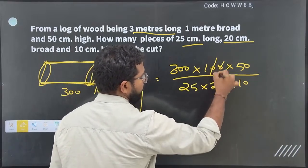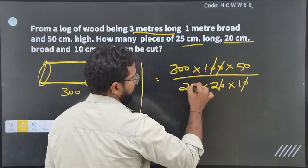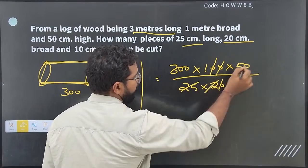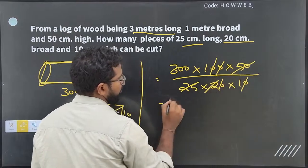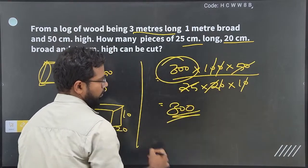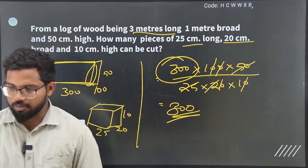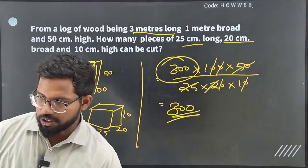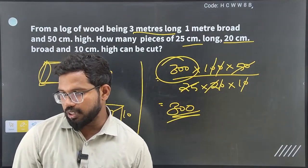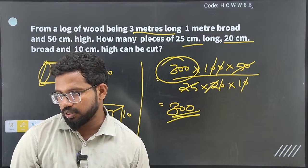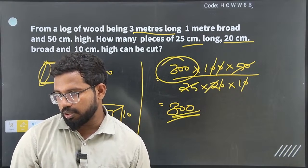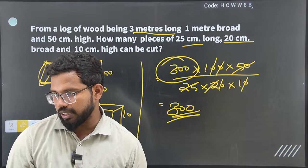Cancelling: 25 into 25 goes twice, 2 × 25 is 50, cancel. Remaining is just 300. So the answer is 300 pieces. Fire Beast Slayer, Mitran, Manish Kartik, Chanakya Crazy Boy, Spirius Swami — correct answers.